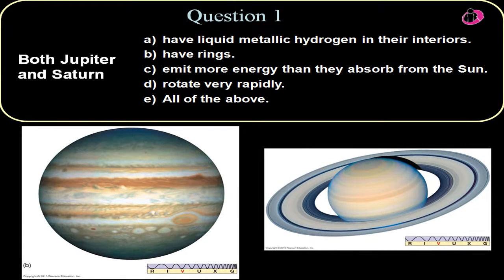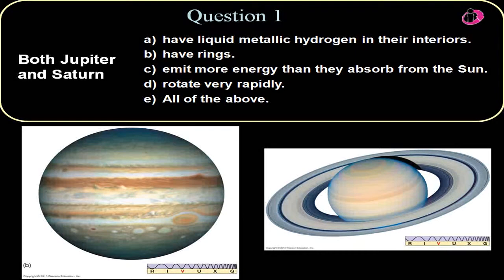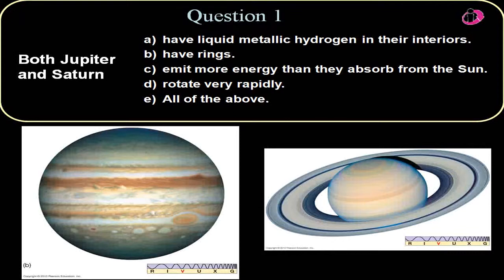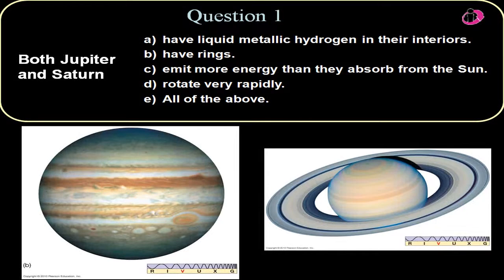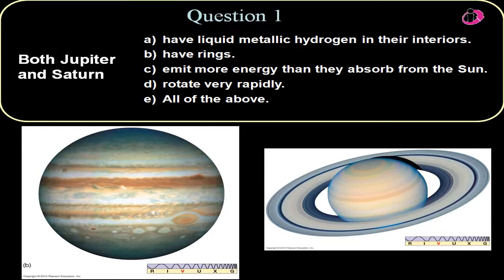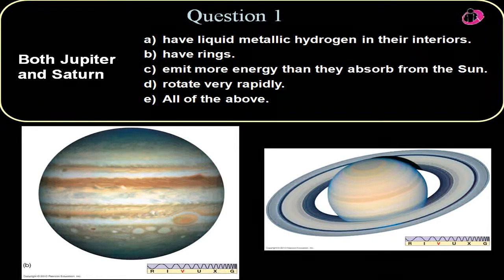Well, they both have liquid metallic hydrogen in their interiors. That's the major cause of their large magnetic fields. They both have rings, even though Jupiter's doesn't show it on this picture, but all the Jovians have rings. Jupiter's is very faint. And they emit more energy than they absorb from the sun. Jupiter's is probably from its residual formation energy. And they rotate very rapidly. They rotate on the order of 10 hours as opposed to our 24-hour day. So all of the above are true for Jupiter and Saturn.